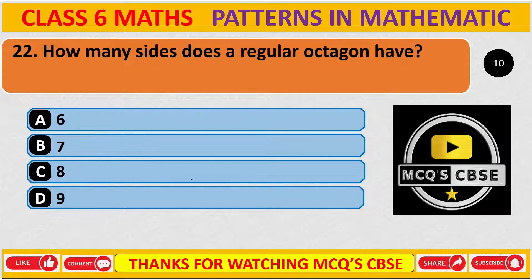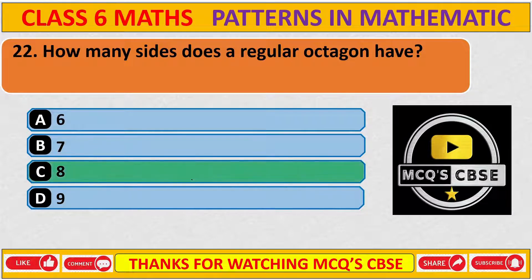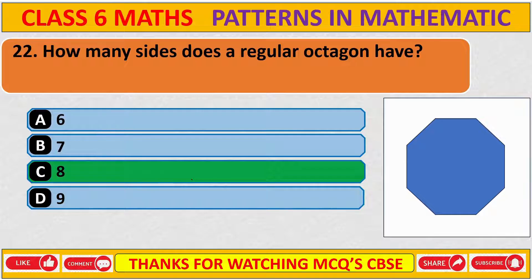How many sides does a regular octagon have? The correct answer is C: 8. A figure with 8 sides is called an octagon, and if all sides are of the same size, it is called a regular octagon.